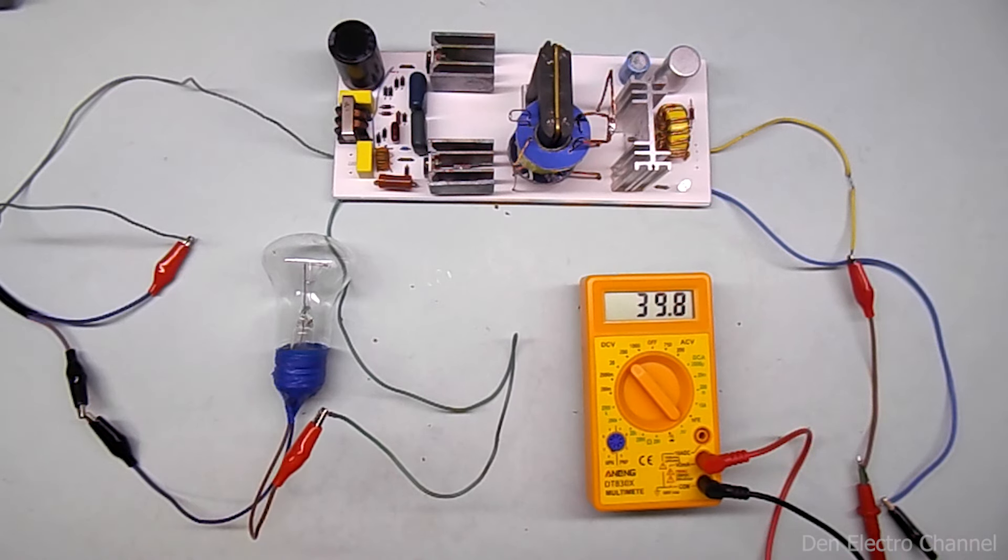After this, the signal LED on the power supply lights up, and voltage appears on the voltmeter.